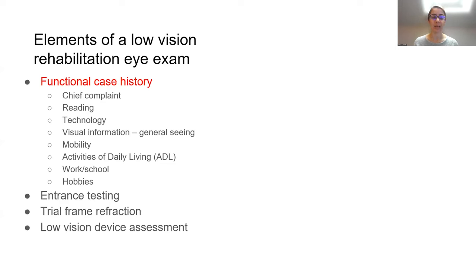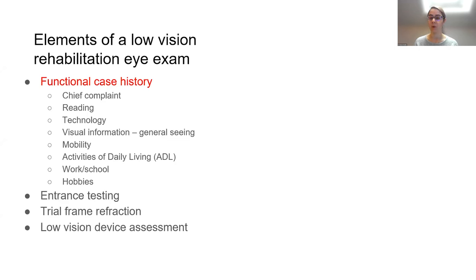Mobility is a really important part of the history for patients with visual field loss. I ask patients if they've had any trips, bumps, or falls, or if they're concerned about these things. Sometimes patients with significant mobility issues will restrict their activities to reduce the likelihood of problems, which itself limits their quality of life. I also ask about daily living activities like cooking, cleaning, laundry, medication management, and for younger patients, work, school, and hobbies.